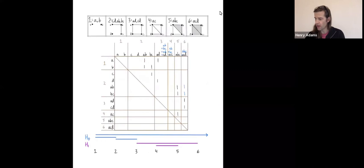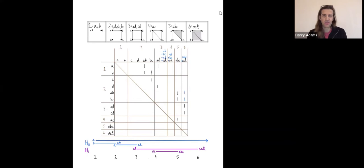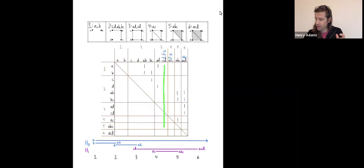I need to show how to read off the persistence barcode from this matrix. I'll label each persistence interval with the simplex whose appearance gives birth to that interval and with the simplex whose appearance kills it. Starting with one dimensional homology in purple: generators for homology are the cycles — things with zero boundary. Those correspond to empty columns. When I have the sum of four edges AB plus BC plus CD plus AD and take its boundary, I get zero — so this gives birth to a one dimensional feature. Empty columns give births to features.